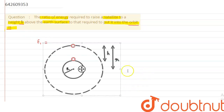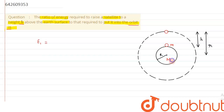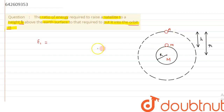For the first case, let's say E1 is the energy required to take the satellite up to height h. Let's understand the situation with a diagram. A satellite of mass small m is placed on the earth's surface, and the earth has mass capital M. When the satellite is on the earth's surface, its potential energy is given by the formula: −GMm/R. When it is taken to a height h, its potential energy is given by: −GMm/(R+h).